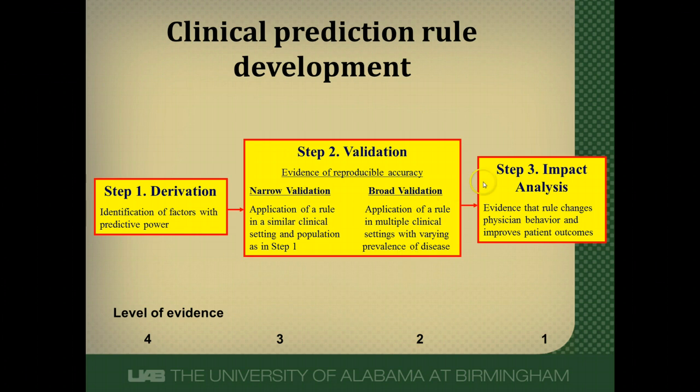The final and most important step is impact analysis — determining whether the rule actually changes clinical behavior. The Ottawa rules are a great example: they were tested to see if they reduced imaging use, patients were followed to ensure no adverse outcomes, and physicians were given the rule information to see how it changed practice. The Wells rule for pulmonary embolism was similarly tested in the Christopher study. However, very few clinical prediction rules ever undergo impact analysis, which is the ultimate way to determine clinical usefulness.